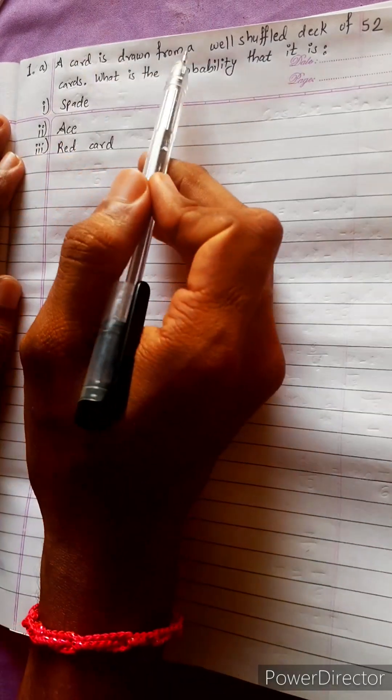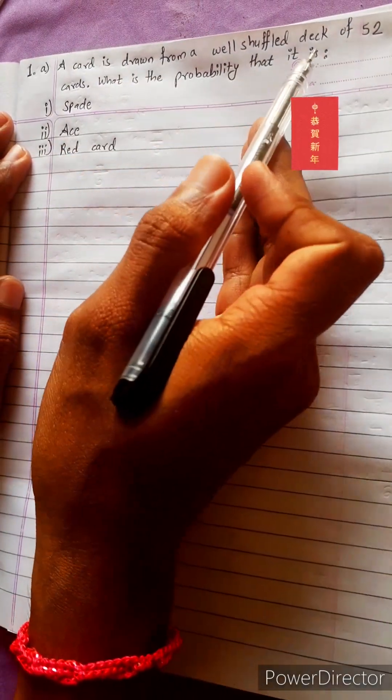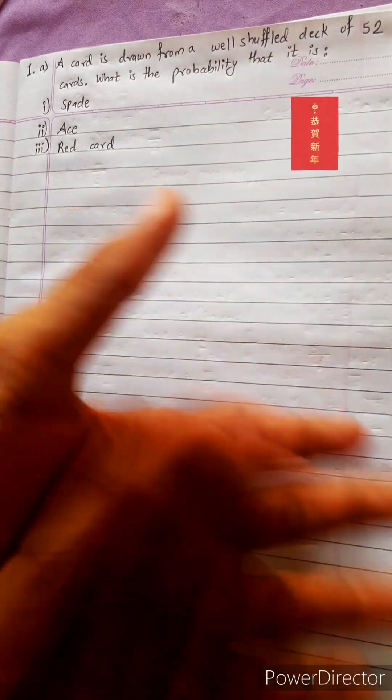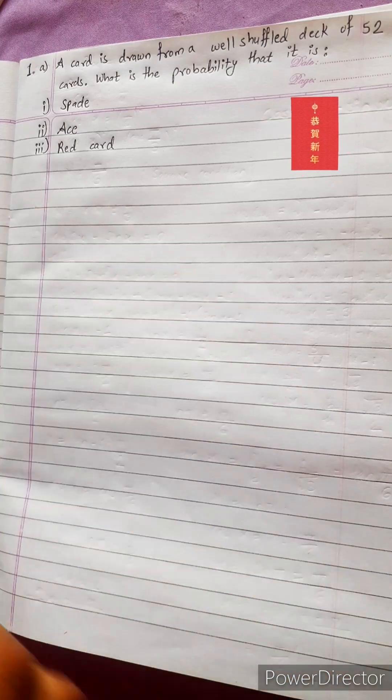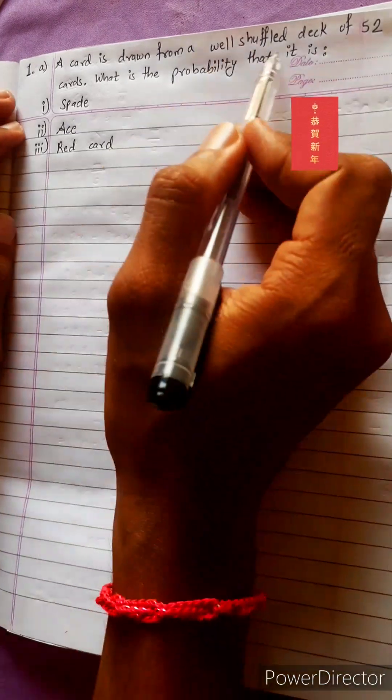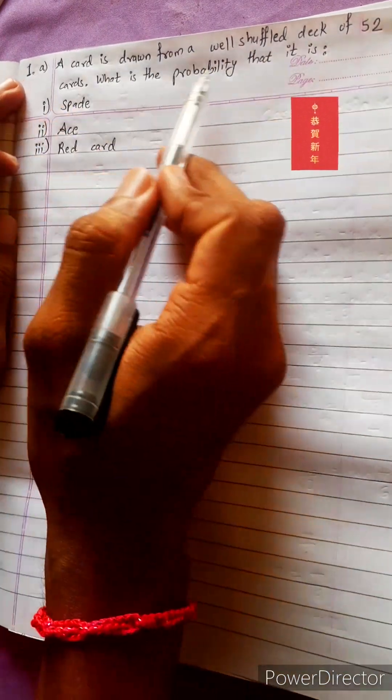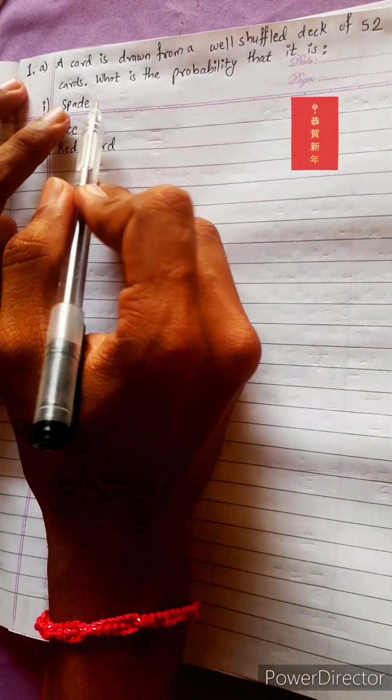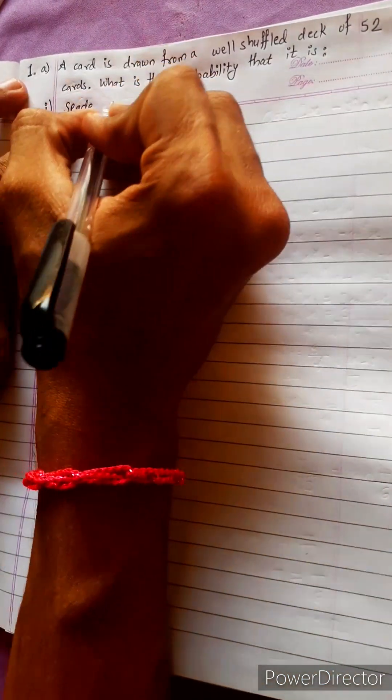Probability. A card is drawn from a well-shuffled deck. What is the probability that it is a spade? Spade is S.